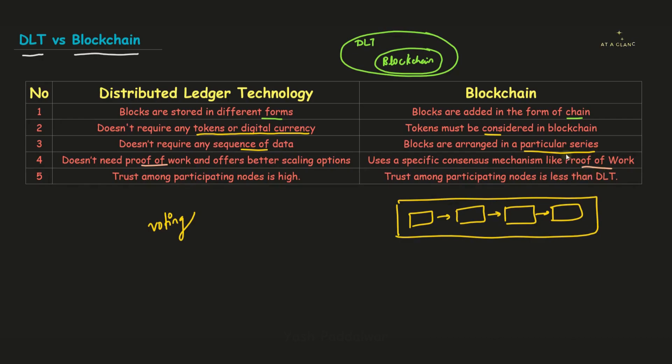For executing this proof of work consensus algorithm, there is a requirement of a lot of computational power as well as it is so much expensive, which leads to scaling problems. More number of nodes may or may not be able to be a part of the blockchain network because of this huge computational power requirement. But when we talk about DLT, it does not require such kind of consensus algorithm. That is why it offers better scaling options. Now, in DLT, what kind of consensus mechanisms are actually executed? We are going to have a look at it in upcoming videos. One of them is voting.